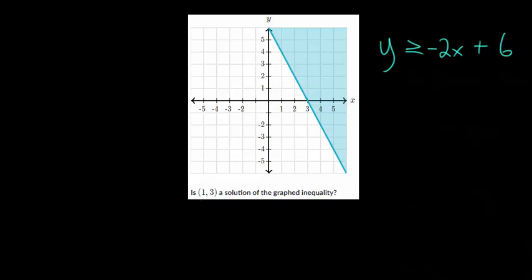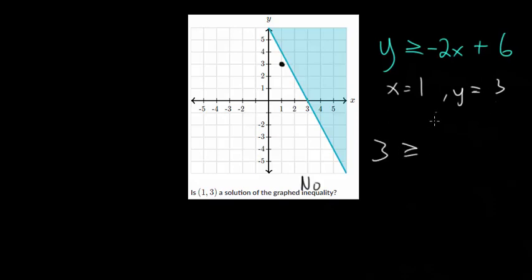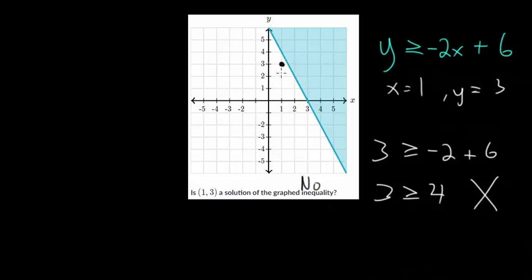Really, we just have to plot the point (1, 3), which is right there. And notice it's not in that shaded region, so no is the answer. You can see this algebraically as well: plugging in x = 1 and y = 3, we get 3 ≥ -2(1) + 6, which is 3 ≥ 4. But obviously this is not true — three is always less than four. So this does not make sense, which is why this point is not in the shaded region — it's not a part of this inequality. So no is the answer.